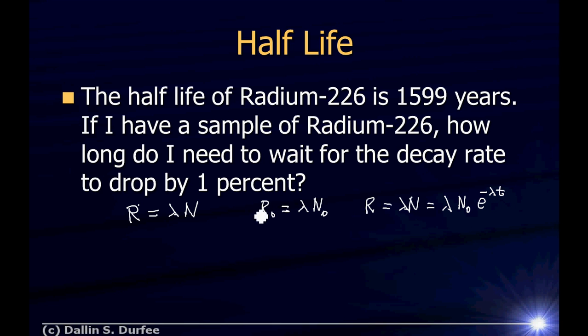And so if I want the decay rate to go down by 1%, that means I want N to go down by 1%. That's all that really means, right? Because it's proportional to the number of nuclei. And so the equation I want here is basically N-naught times 0.99, that's 1% smaller, N-naught times 0.99 is 1% smaller than N-naught.